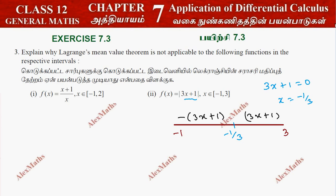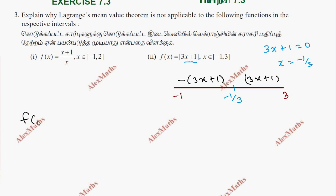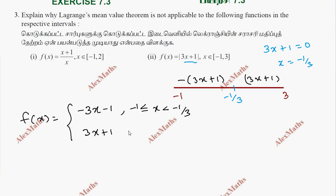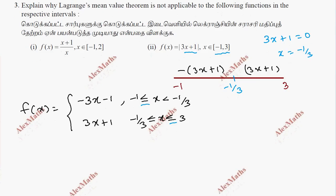The modulus function |3x+1| is defined piecewise: it equals minus 3x minus 1 for minus 1 less than or equal to x less than minus 1 by 3, and equals 3x plus 1 for minus 1 by 3 less than or equal to x less than or equal to 3. The interval is closed, so minus 1 and 3 are included. The function can be defined and is continuous piece-wise.